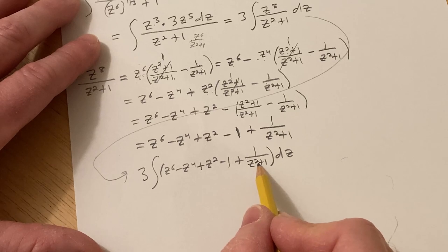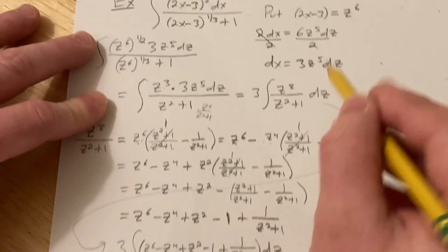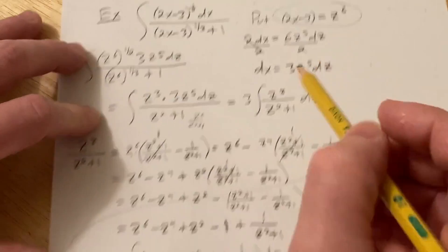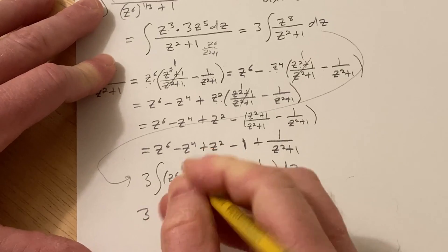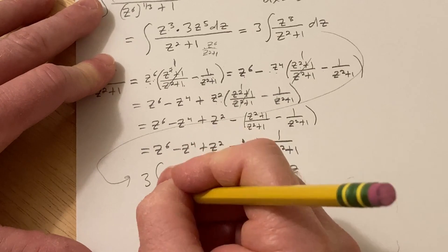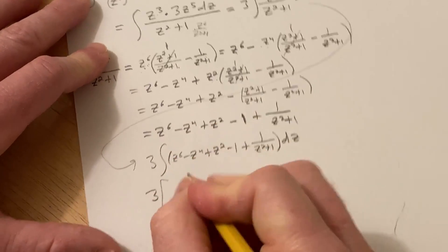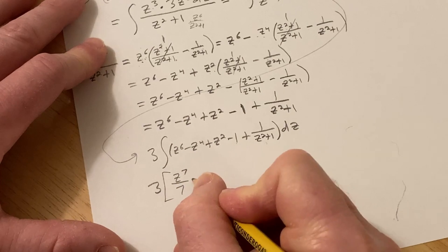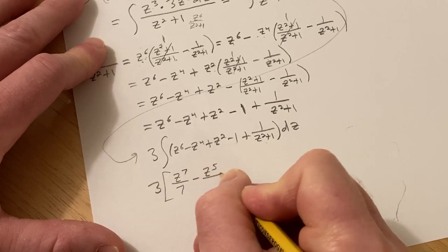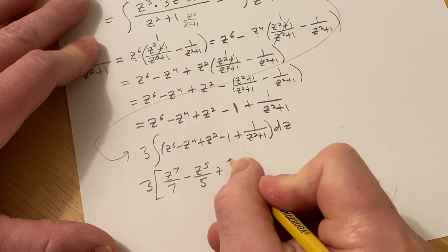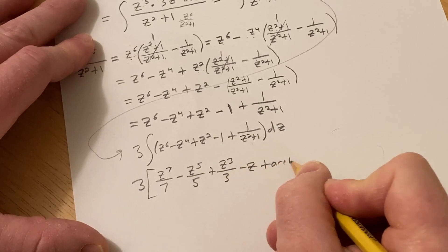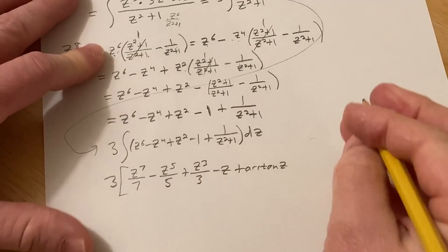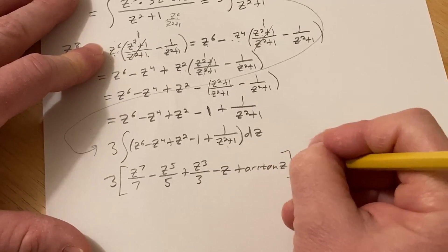And then we still have to go back and make our substitution correctly, because we still have this up here. This will be equal to 3, I'm going to leave the 3 outside. This will be z^7/7 minus z^5/5, just using the power rule, plus z^3/3 minus z plus the arctan of z, plus our constant out here.